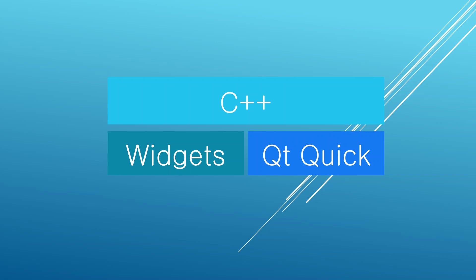Qt Widgets is an older API that is mainly used to target desktop platforms, so you can use this for Windows, Mac and Linux. Qt Quick is a newer technology you can use to target mobile and embedded devices. Both technologies are built in C++ and they provide a way to interface or extend them using C++, or connect to what is already available in the Qt framework.